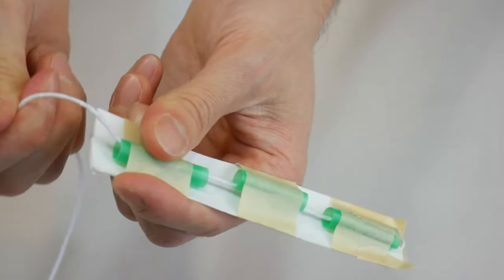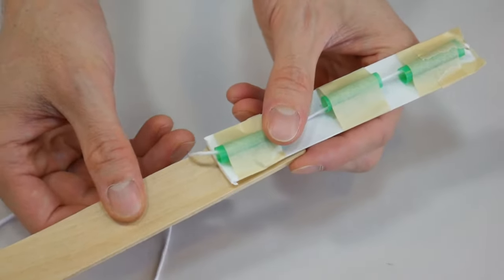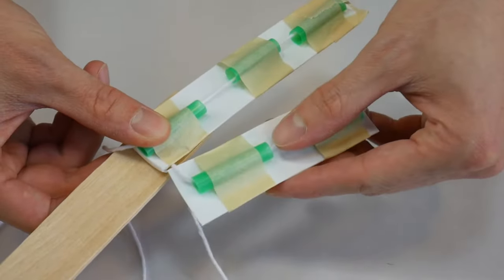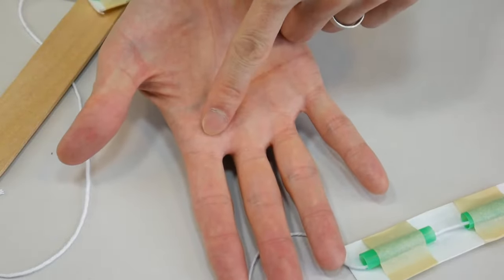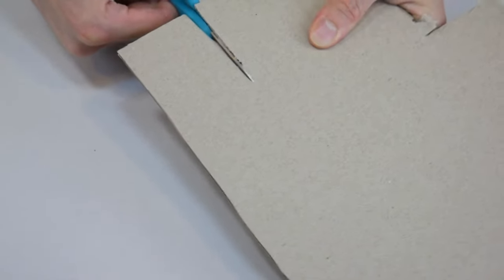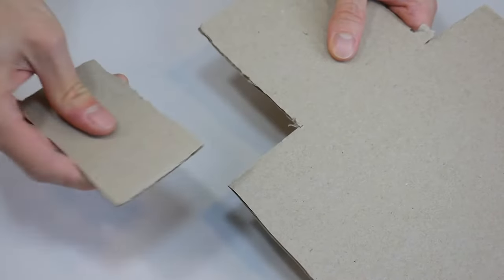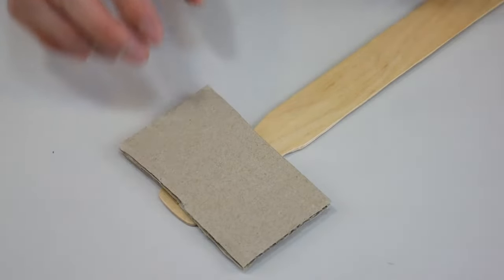Alright, this finger is done. Now before attaching the finger to the handle, we need to build something so there's space for other fingers, kind of like how our palm connects all of our fingers. To make a palm for our bionic hand, just cut out a cardboard rectangle and then this is going to get taped onto the handle.